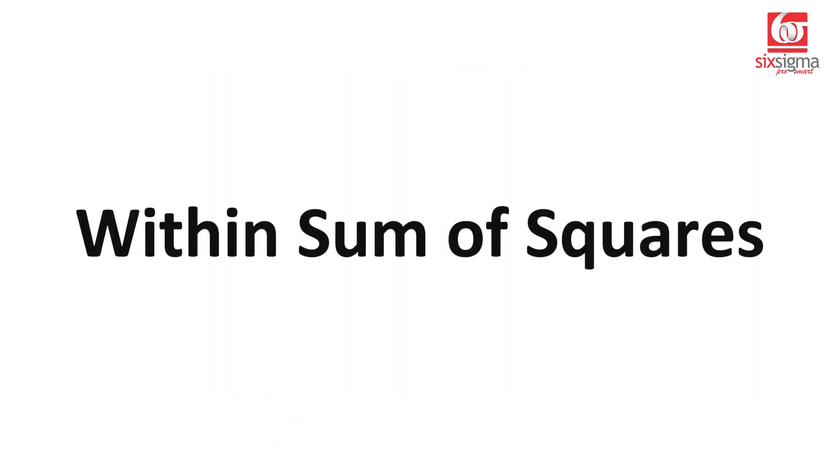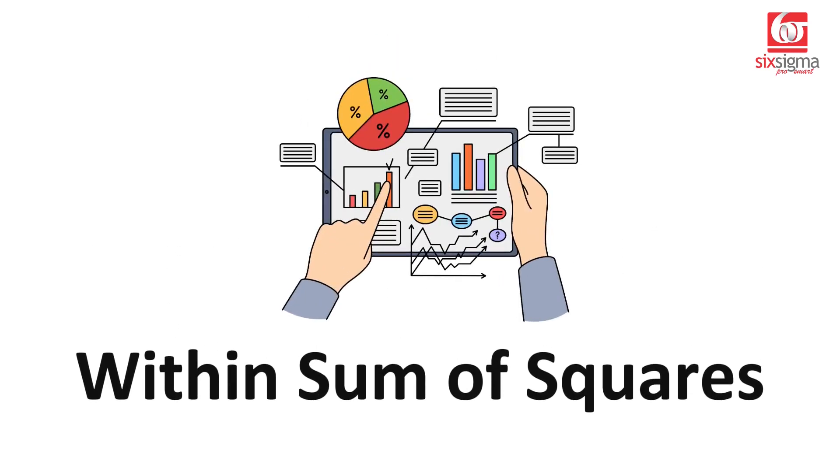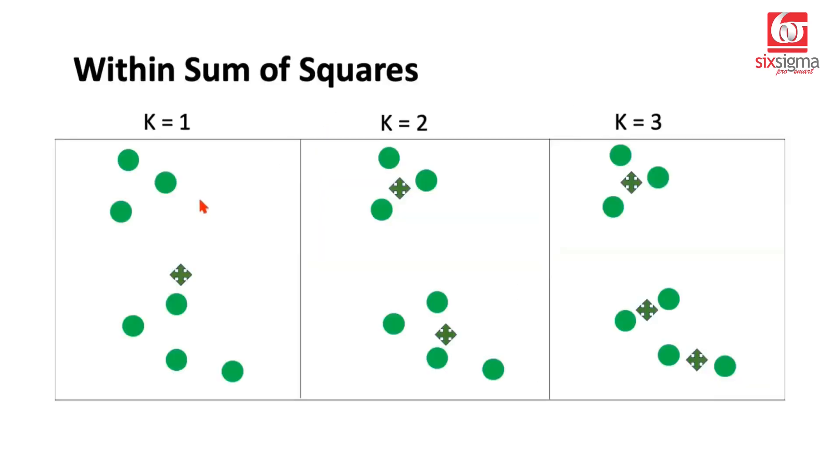We are introducing a concept known as within sum of squares. Let's say we have some data. It's the same data represented in three different grid blocks. Scenario one is when we have just one cluster, which means we will have one center and all these points will be members of that one cluster.